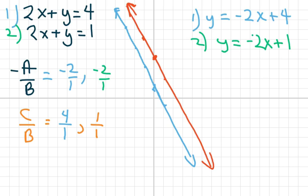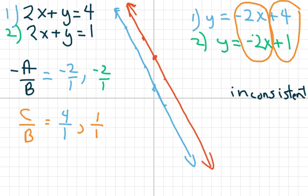So if you notice, they have the same slope but different y-intercepts. That means these are parallel lines, and they are called inconsistent because there's no solution. They'll never intersect. Parallel lines never intersect. So basically, I'm going to change these colors. This was our blue one and this was our green one.